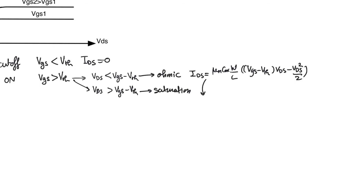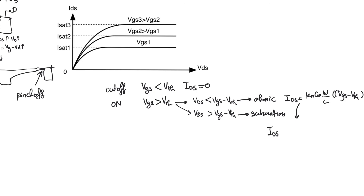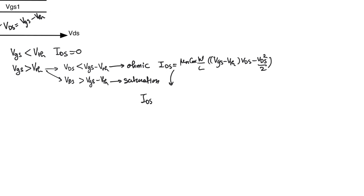The expression of current in the saturation regime equals the ohmic current evaluated at the pinch-off point. Substituting V_DS equals V_gs minus V_threshold into the ohmic equation, we obtain saturation current equal to mu_N C_oxide W over L times one-half times (V_gs minus V_threshold) squared. This is the expression for pinch-off saturation current.